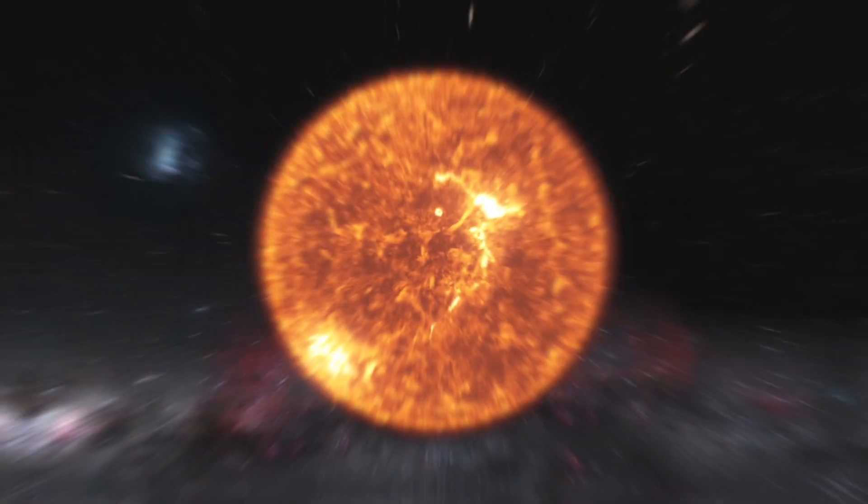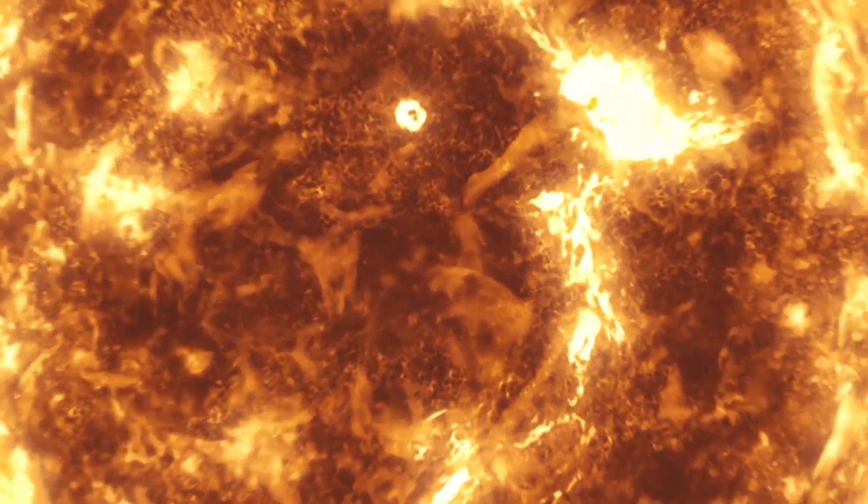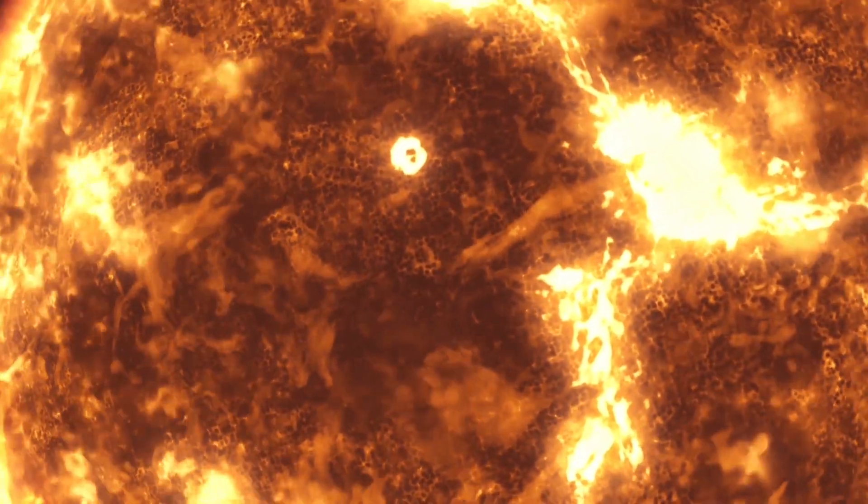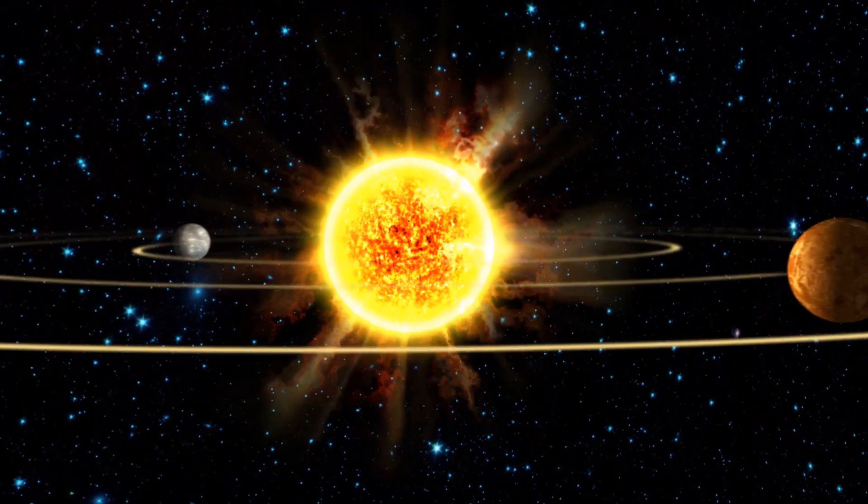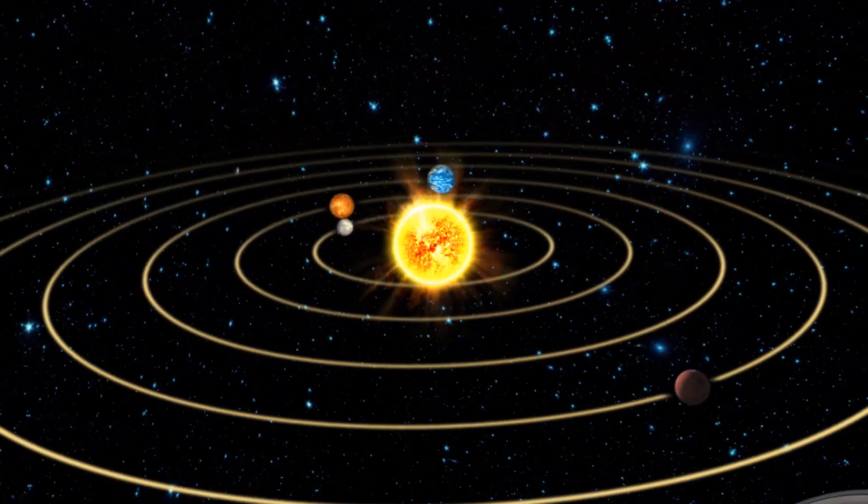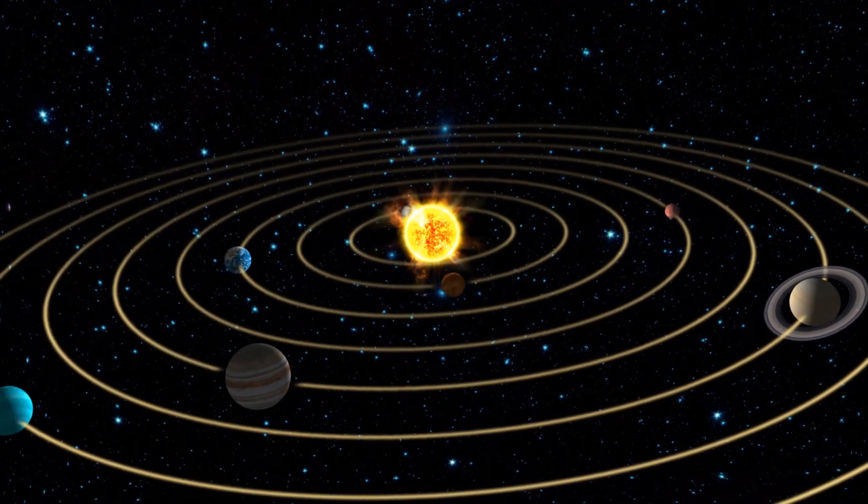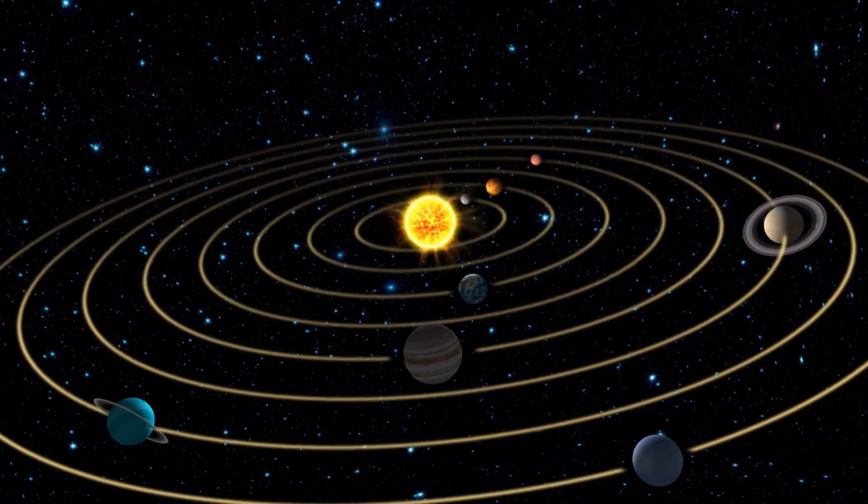Then there's the Sun, which is so heavy that even the Earth is falling into it. Don't worry though, as we're going pretty fast and keep missing it, along with the other planets. This is called an orbit, and everything with mass is orbiting something bigger.